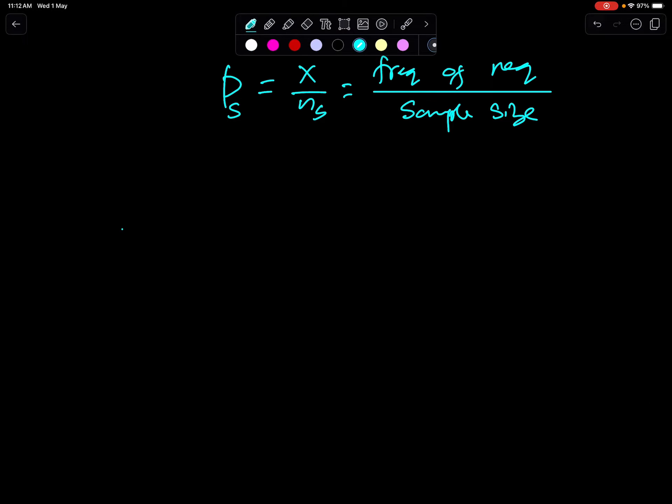And population proportion for large NS, for large NS say NS greater than or equal to 30, is approximately normal. So it's PS, PS QS over NS. This is the distribution of PS.